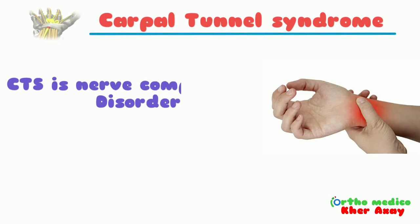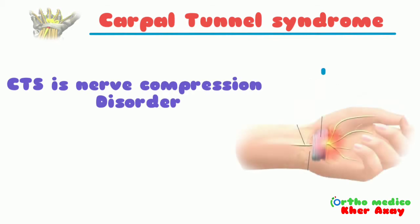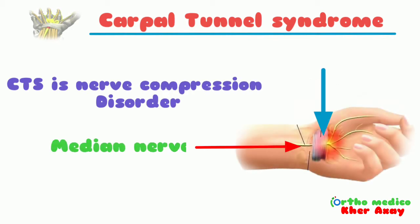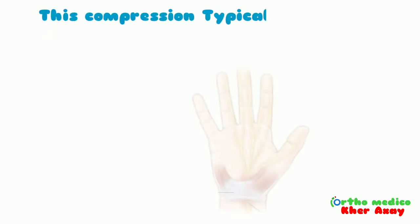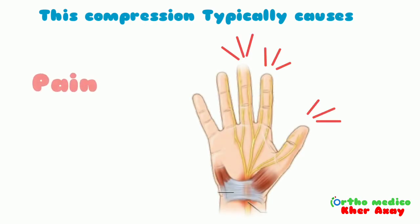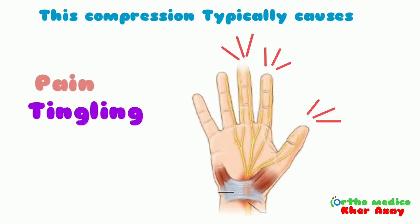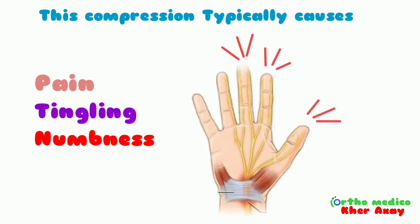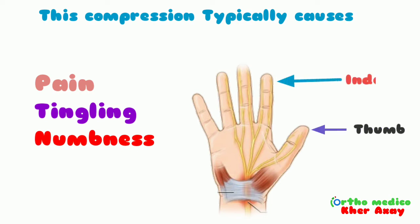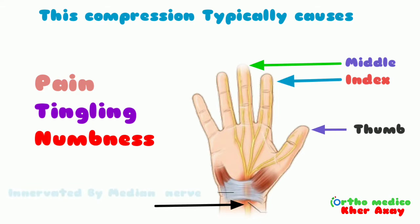Carpal tunnel syndrome is a nerve compression disorder caused by median nerve compression at the wrist level. This compression typically causes pain, tingling, and numbness at the thumb, index, and middle finger, which are innervated by the median nerve.